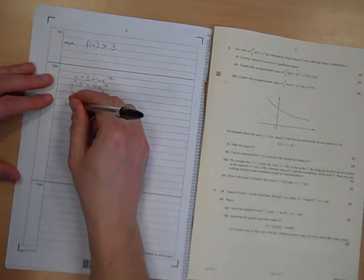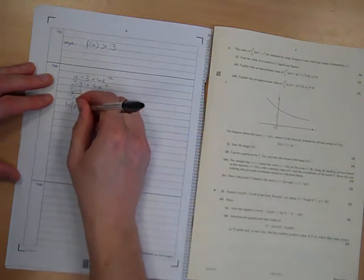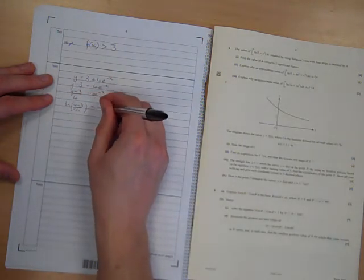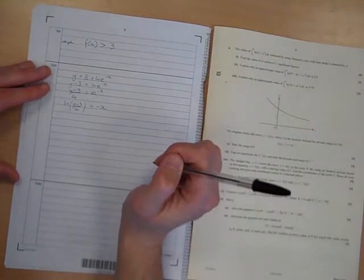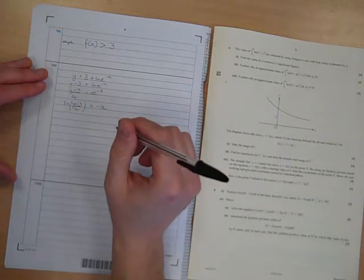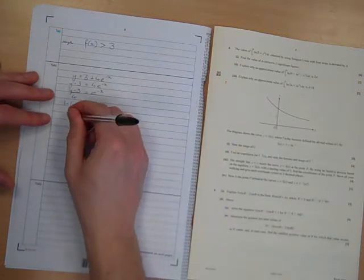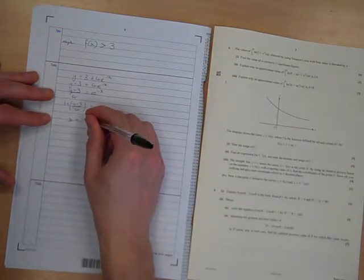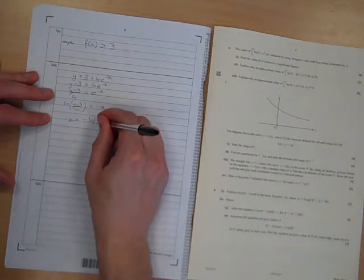Take logs of both sides. Natural log of y minus 3 over 4. So we're going to bring that over and we're going to say therefore x is minus the natural log of y minus 3 over 4.